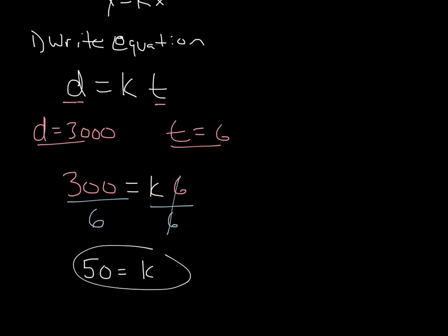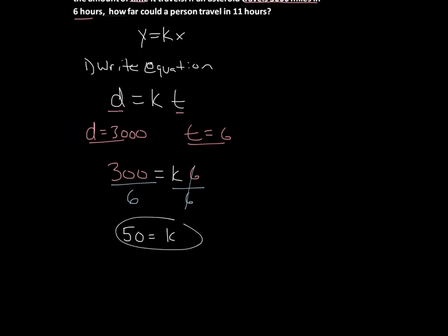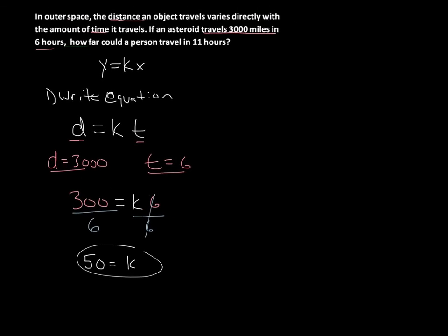Now that we have k, let's look at our original equation. We solved for k and know it's 50. Let's plug it back in. Our new equation is d = 50t, because we now know the value of k is 50.